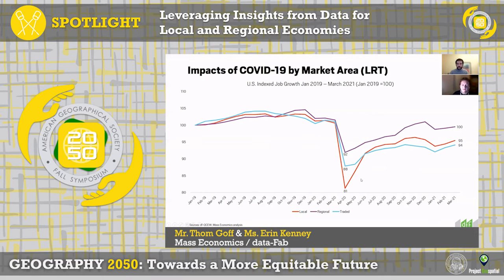These market areas also offer a really important lens and foundation for understanding broader economic trends. This chart shows job growth from January 2019 to March 2021, indexed to January 2019, showing the impact of COVID by market area. Local industries were extremely hard hit in April — down nearly 20% from January 2019 levels — but the recovery has been fairly promising. Traded industries were not the hardest hit, but recovery has not been as robust as local. Regional industries fared much better than local and traded.